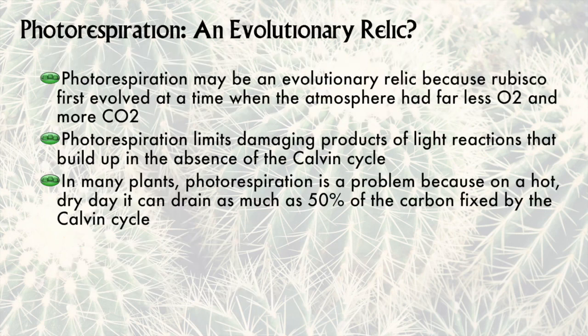So why does photorespiration happen at all? Because Rubisco first evolved billions of years ago, when oxygen wasn't abundant in the atmosphere. So if a little oxygen got into the works, it wasn't a big deal. But as oxygen concentration increased in the atmosphere due to the evolution of Photosystem II, Rubisco didn't really change with the times. Most photosynthetic organisms coped by producing more Rubisco, so photorespiration just happened.